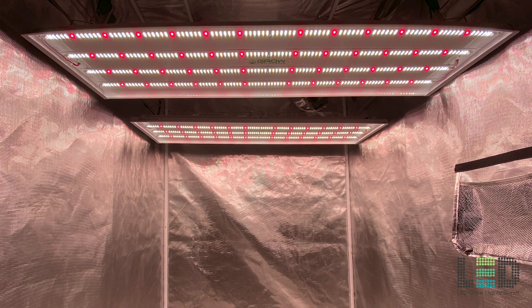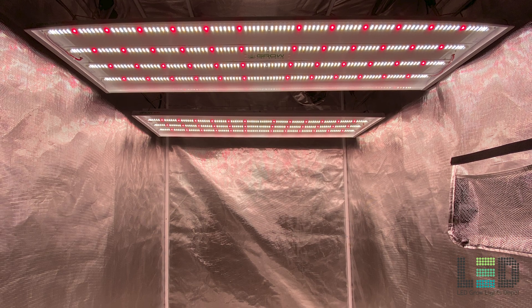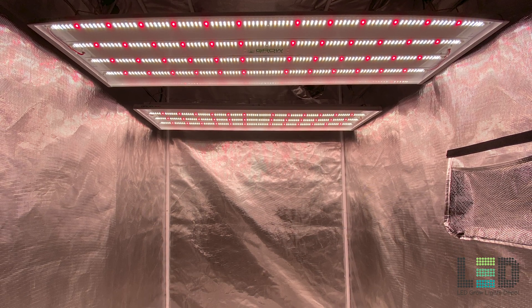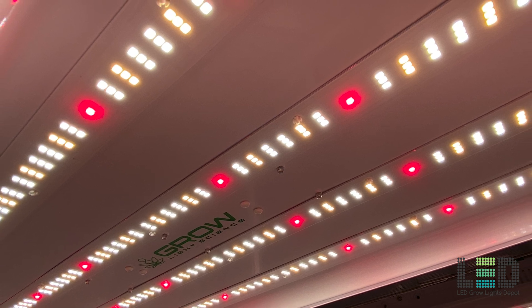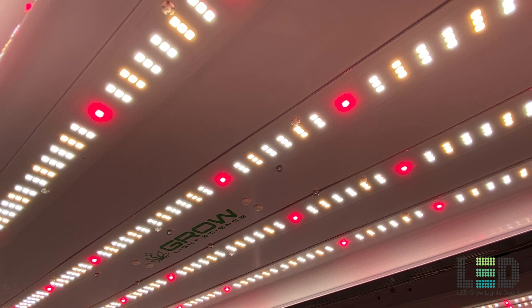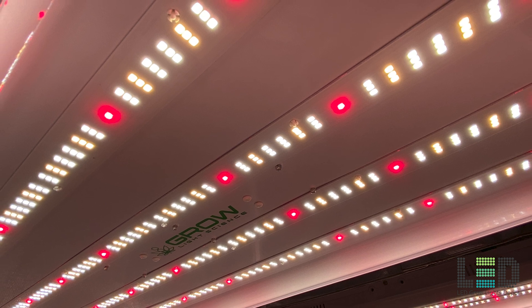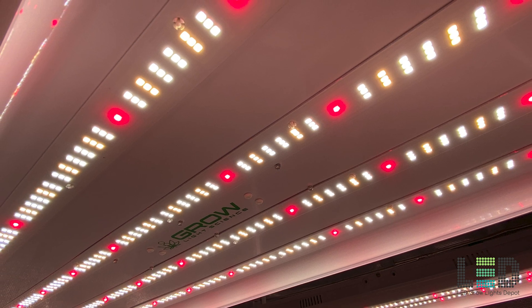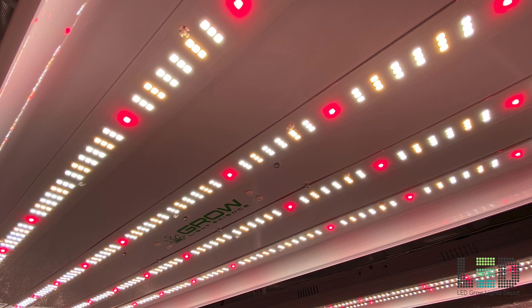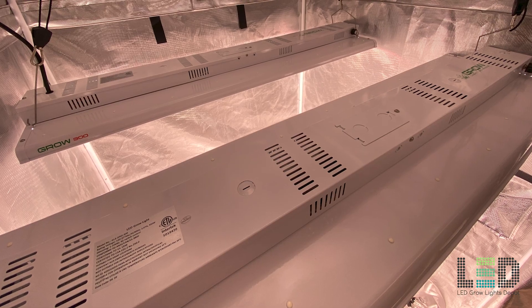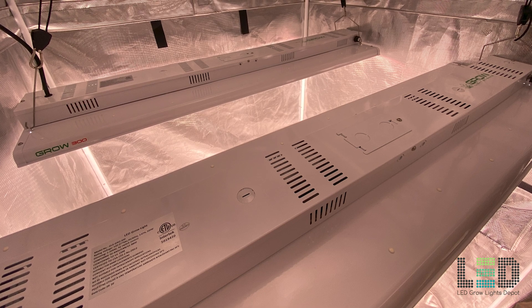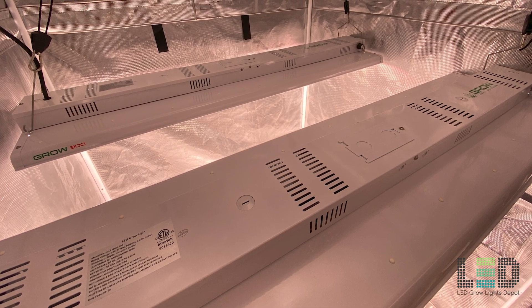As far as the downsides of the Grow 300, there are a couple that stand out. First, you need two lights to cover a 4x4 or 5x5 area. Therefore, you need twice the amount of lights to cover what most other large bar-style fixtures will cover. The upside of this is that the Grow 300 footprint is modular and flexible, so if you have a grow space that doesn't allow complete 4x4 sections, you can create the light footprint that works for you. You also get really good uniformity with this type of layout.